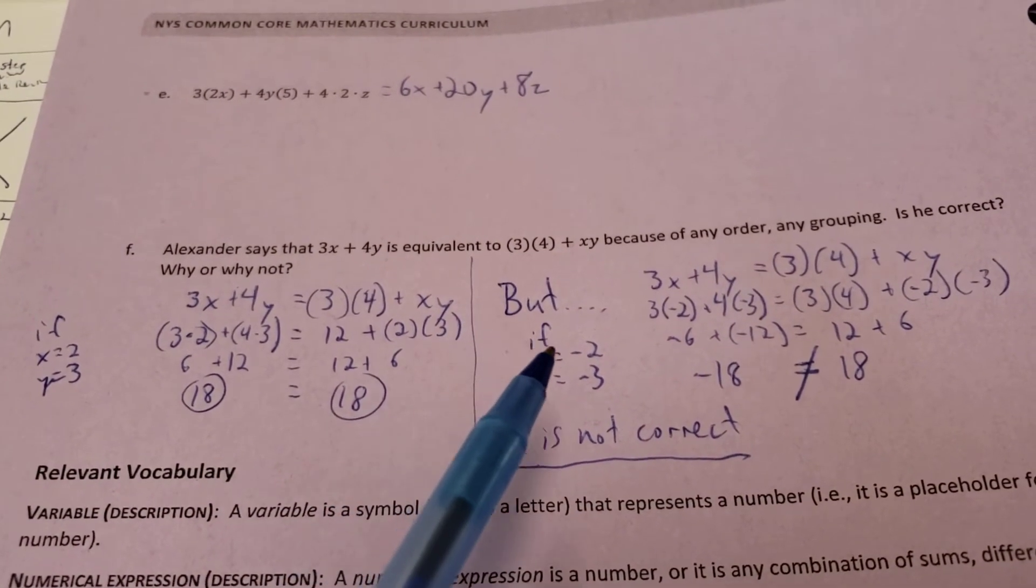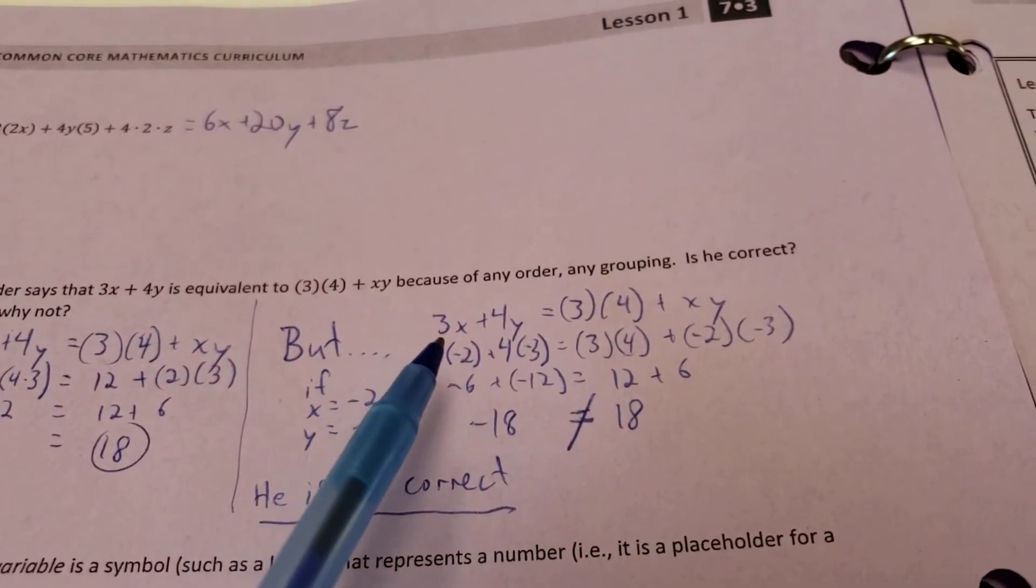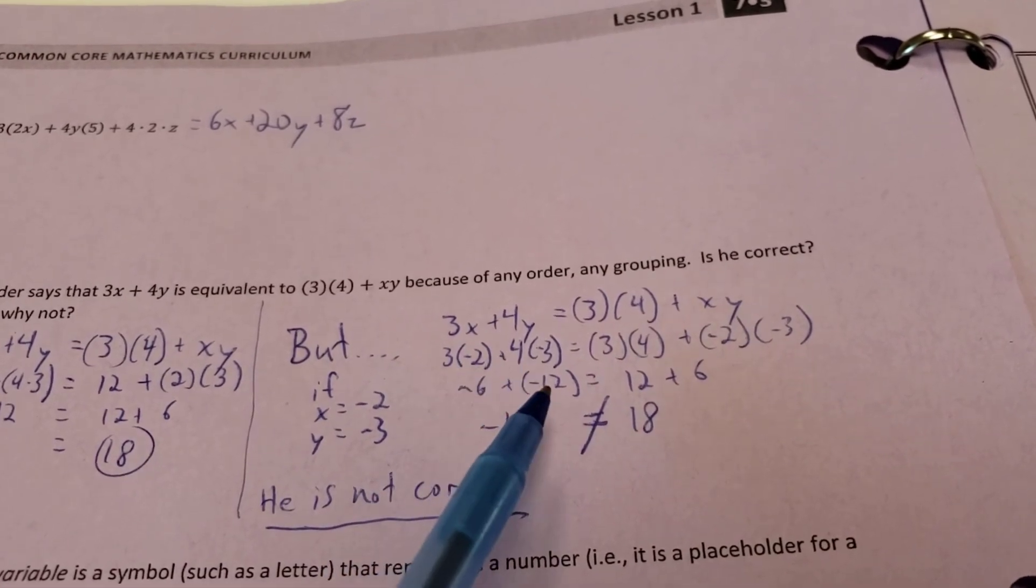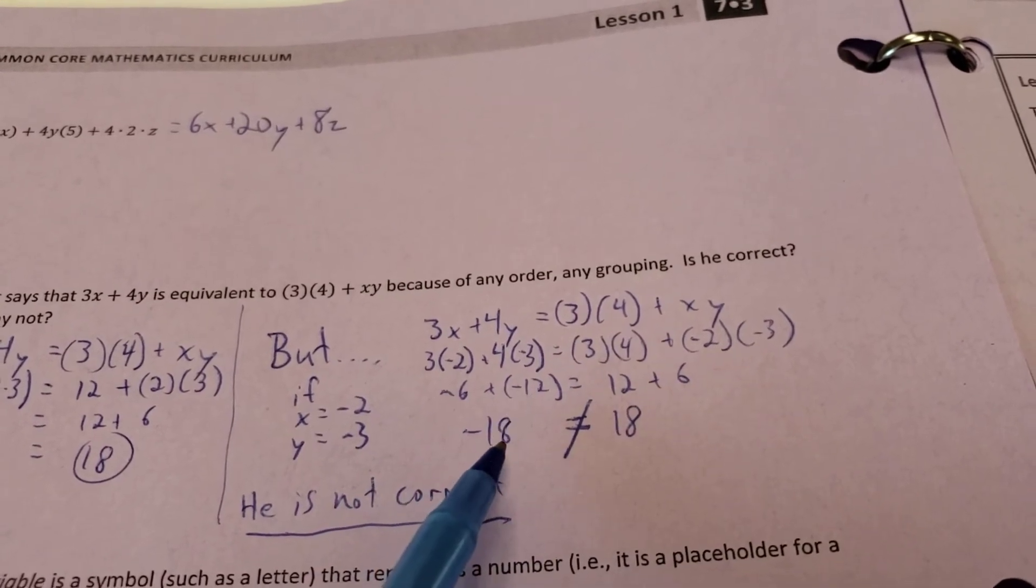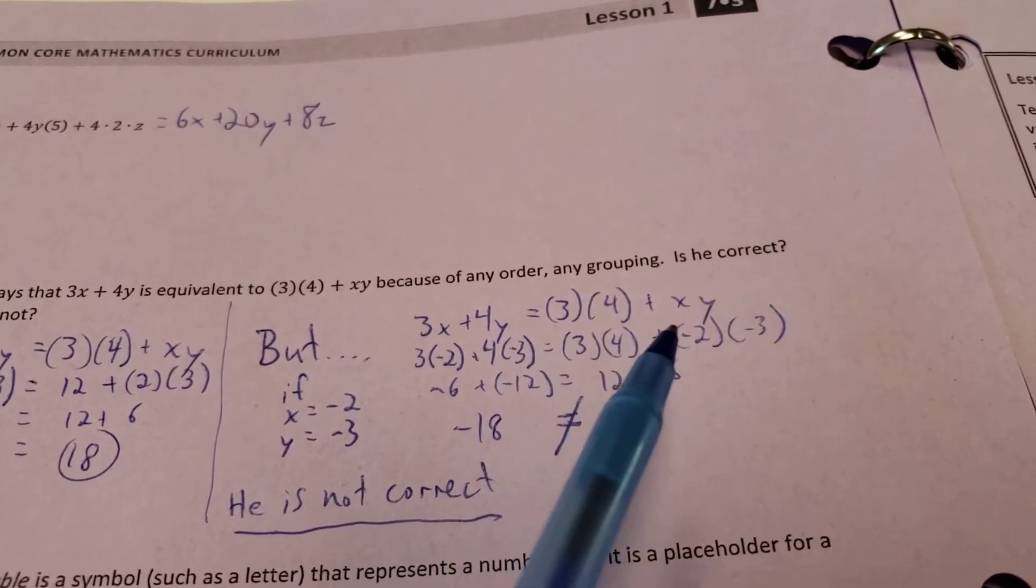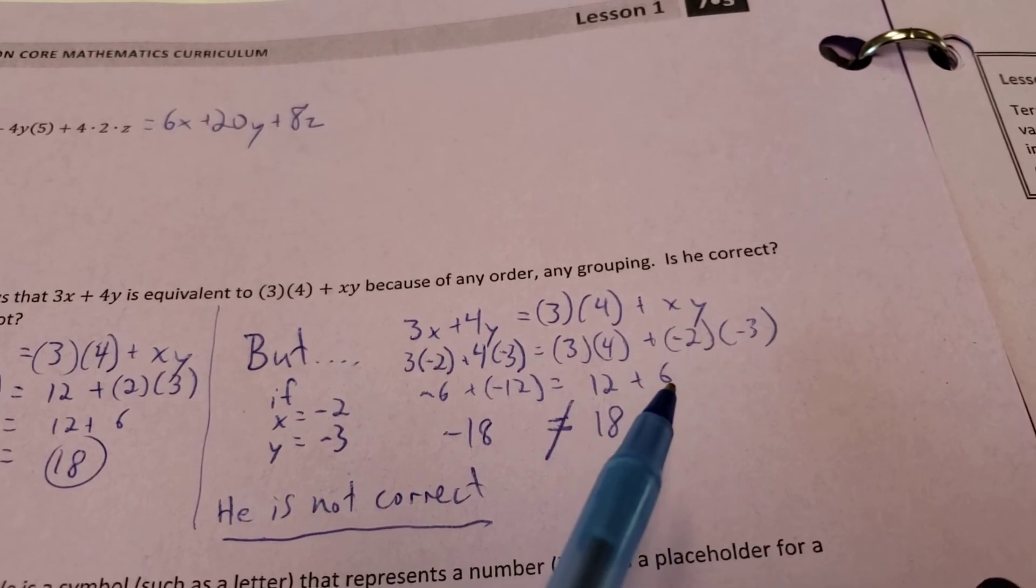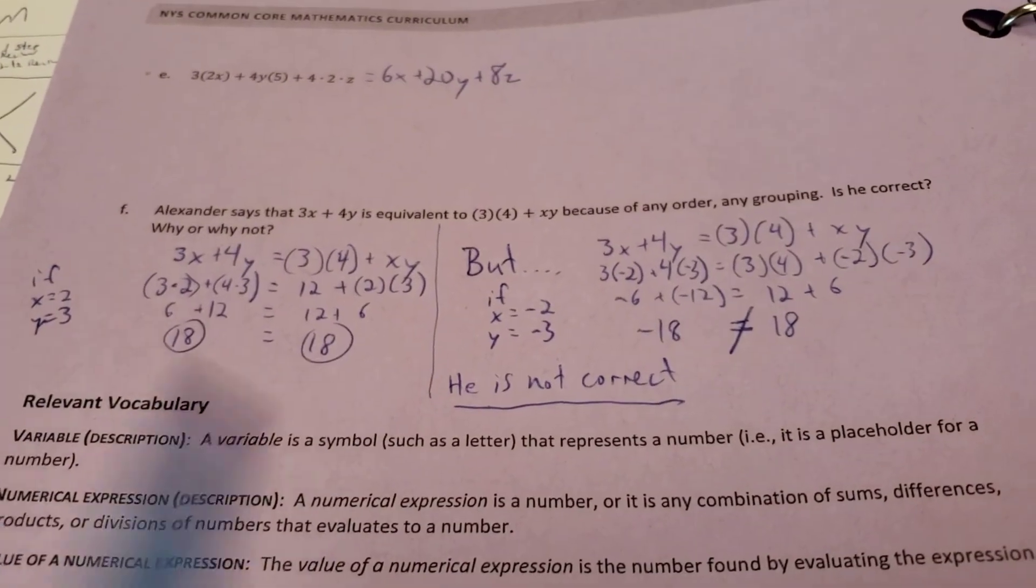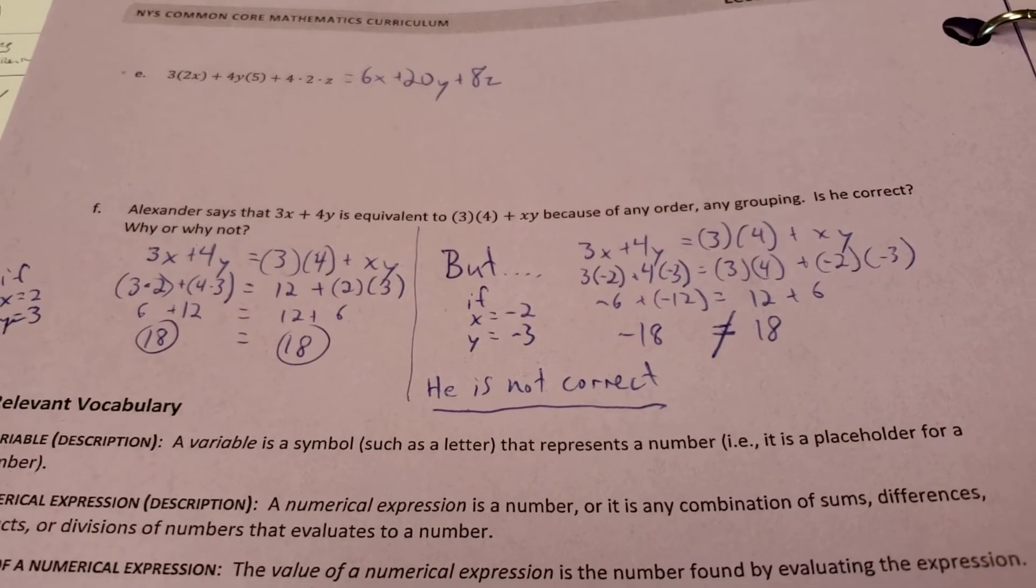But let's try a different set of numbers. What if I have a negative 2 and a negative 3 to represent the x and the y? Well, if that's the case, 3 times a negative 2 gives me a negative 6. 4 times a negative 3 gives me a negative 12, and negative 6 plus negative 12 gives me a negative 18. Now, is that equivalent to 3 times 4 being 12? And x times y, or what we'll call negative 2 times negative 3, which gives you a positive 6. In this case, it gives us a positive 18. So he is not correct because you have a negative and a positive. The same are not equivalent. So he wouldn't be correct in this statement.